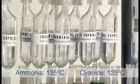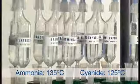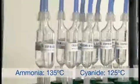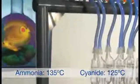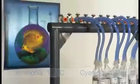The hot block should be heated to 125 degrees Celsius for cyanide distillations and 135 degrees Celsius for ammonia distillations. Once the temperature has been reached, the distillation process takes one hour.